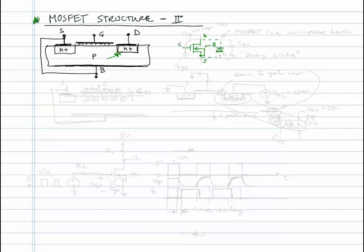So the MOSFET is a unipolar device because of this diode being here. And if you try to put a negative voltage across VDS, the diode will turn on.